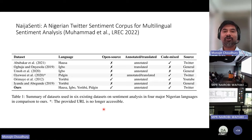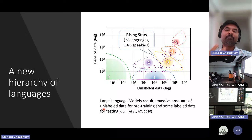That's why people got very excited that their language could now have technology, and why we started creating datasets to measure how well these multilingual models work for a given language, and then how to make them better. Unfortunately, as we dug deeper, the story turned out to be more complex. Not all languages have enough unlabeled data to build good pre-trained models.